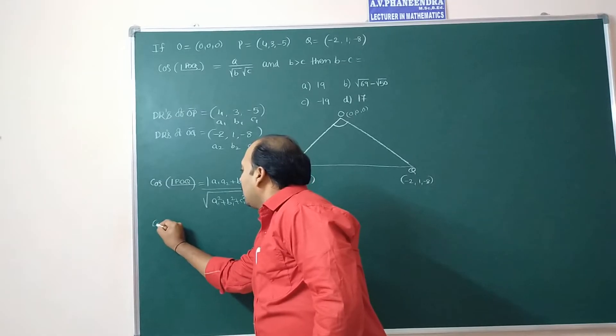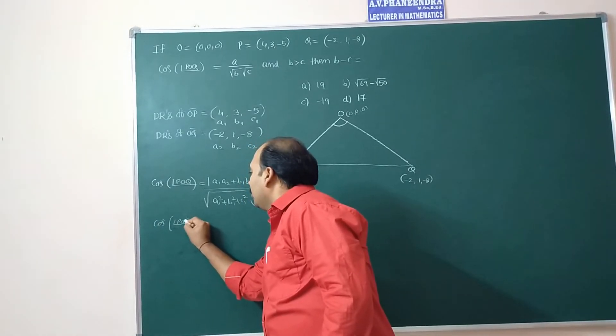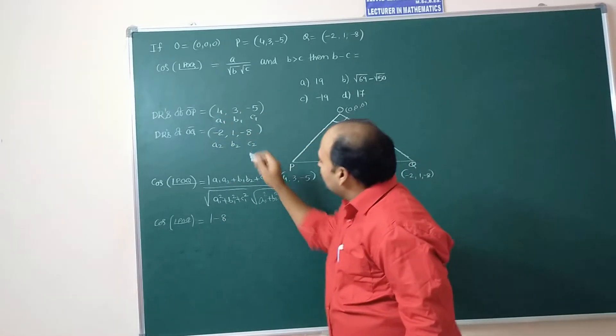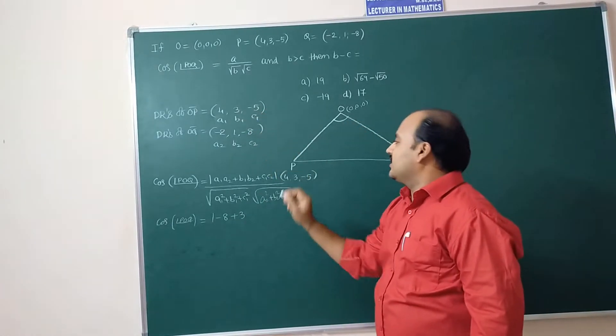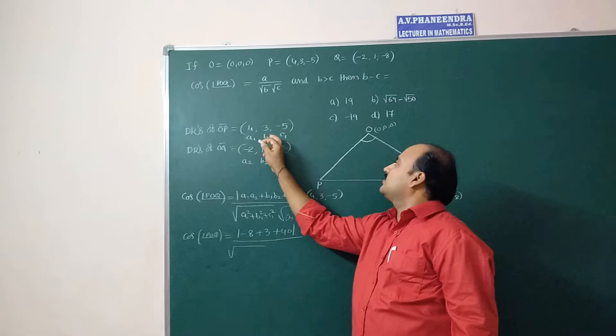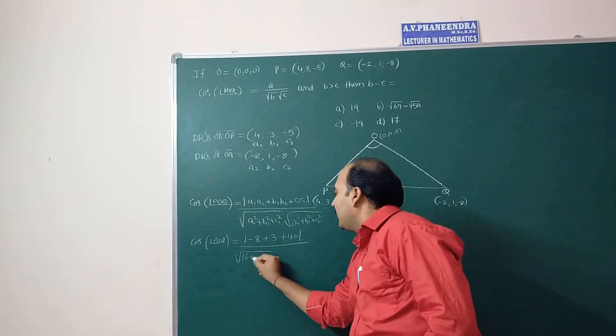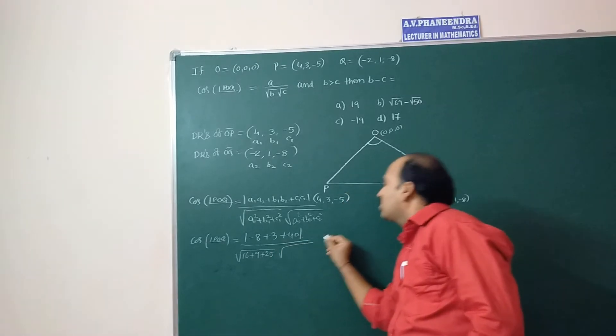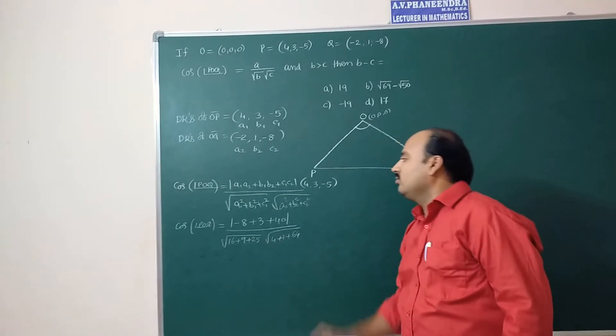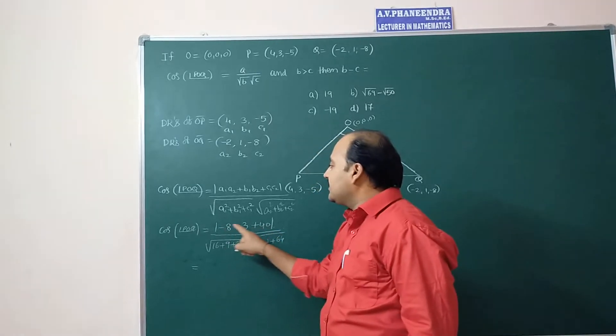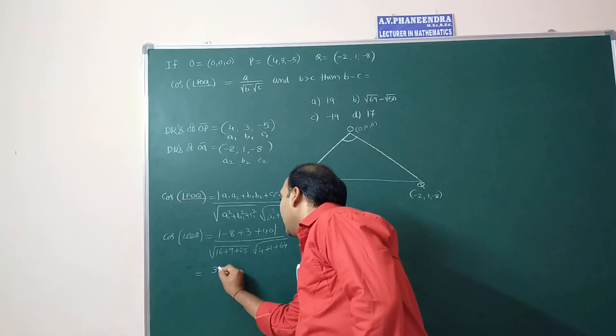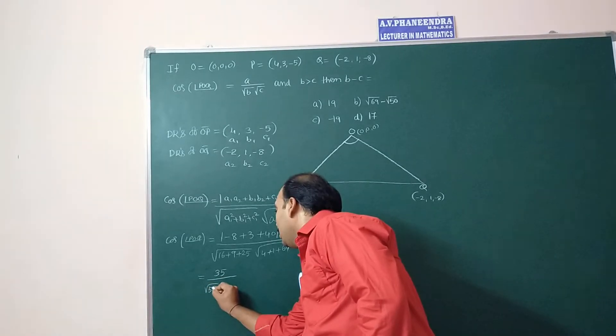Now substitute. Cos of angle POQ equal to, A1A2: 4 into minus 2, mod minus 8, 3 into 1 plus 3, minus 5 into minus 8 plus 40, divided by divided by.